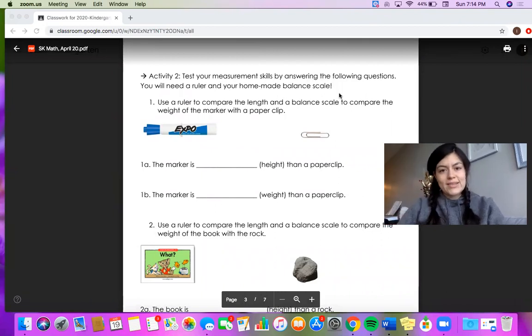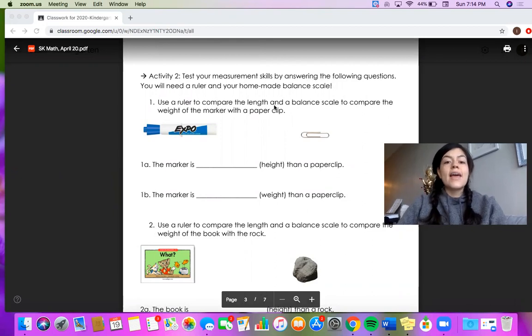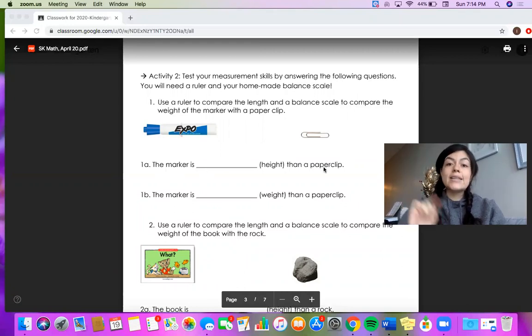But also you could actually take a ruler out and measure these two things or use your homemade balance scale to measure the weight of these two things. So for example in number one they're asking you to use a ruler to compare the length and a balance scale to compare the weight of a marker and a paper clip. Now if you wanted to practice using a ruler you could measure exactly how long they are and figure out which one is longer. Or you could really visualize these two things and make an estimate, a smart guess, as to which one is longer, which one is heavier.